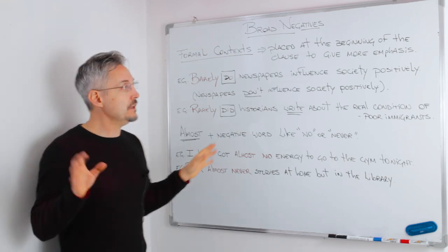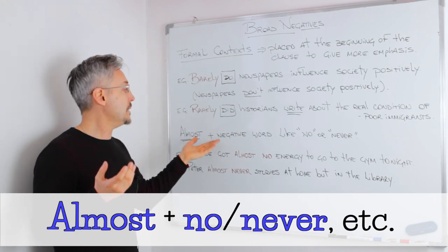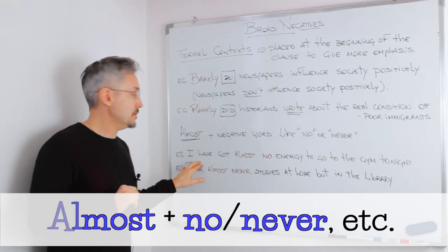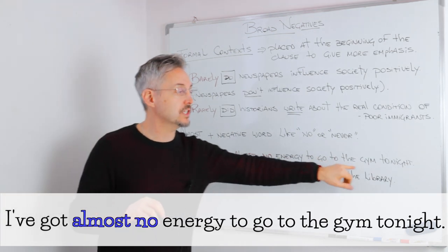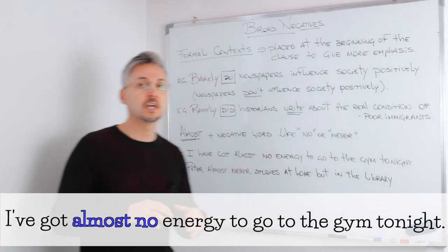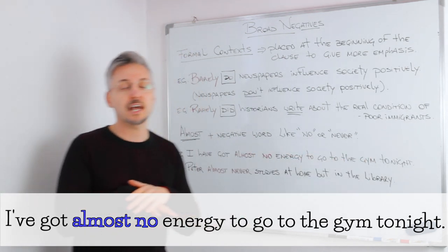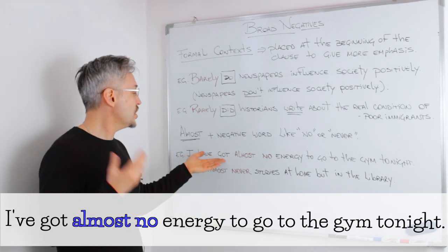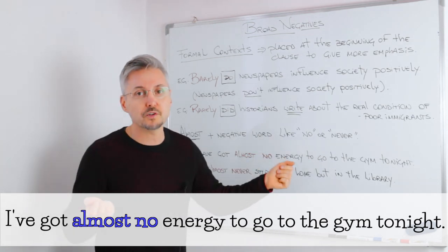So if you don't want to use the broad negative, you can always use 'almost' plus a negative word like 'no' or 'never'. I wrote two examples. I have got almost no energy to go to the gym tonight. I cannot say 'I haven't got energy to go to the gym tonight' — that means 100% I don't have energy. But if I said 'I have got almost no energy', there is a degree of energy there — so I can go to the gym tonight. Maybe.